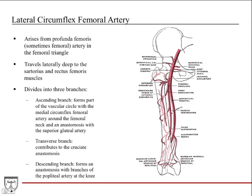The lateral circumflex femoral artery — labeled external circumflex in this diagram — also arises from the profunda femoris in the femoral triangle, sometimes from the femoral artery. It travels laterally, deep to the sartorius and rectus femoris muscles, and divides into three branches: an ascending branch forming part of the vascular circle around the femoral neck and anastomosing with the superior gluteal artery; a transverse branch contributing to the cruciate anastomosis; and a descending branch forming an anastomosis with branches of the popliteal artery at the knee.